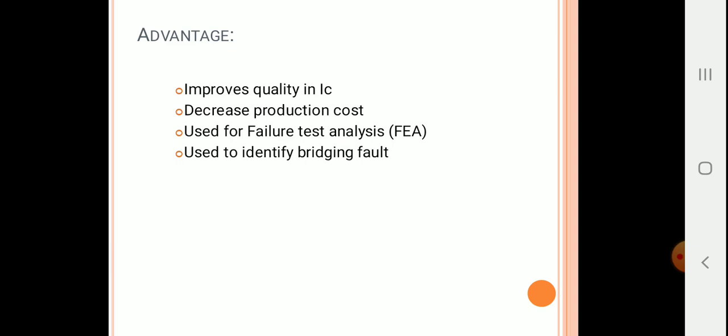It is used to test all the transistors or all the components in an IC. Mainly, it is used to identify bridging faults - that is when two or more networks are cascaded. Whenever there is a cascaded function in place, this IDDQ testing is of more importance.